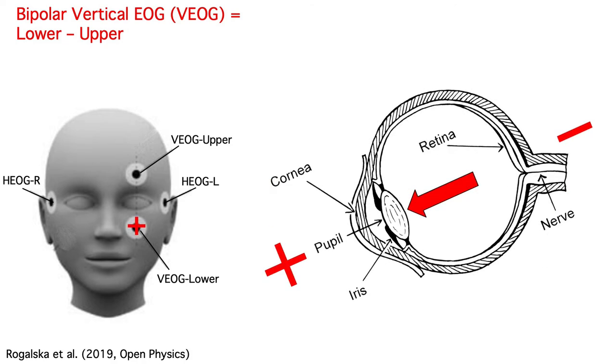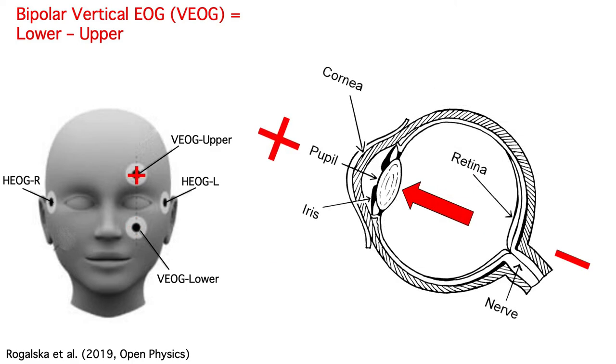If the eyes rotate downward, the voltage becomes positive below the eyes. And if they rotate upward, the voltage becomes positive above the eyes.